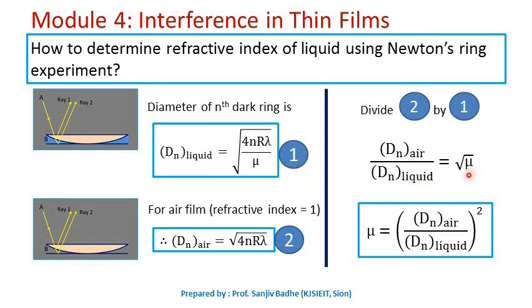Therefore, the refractive index of the liquid equals the square of (D_n)_air upon (D_n)_liquid. So if you divide the diameter of the nth dark ring in air by the diameter of the nth dark ring in liquid and square that, you will get the refractive index of the liquid.